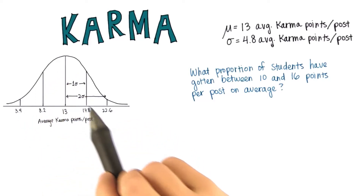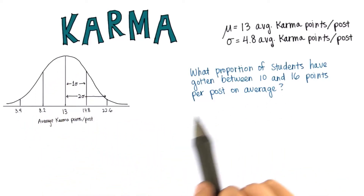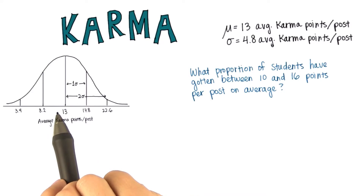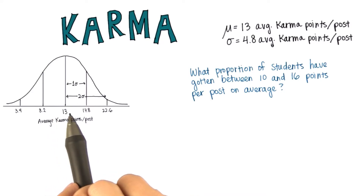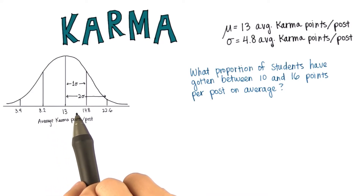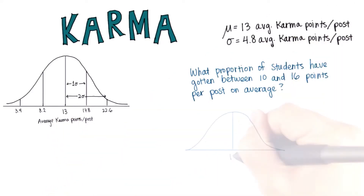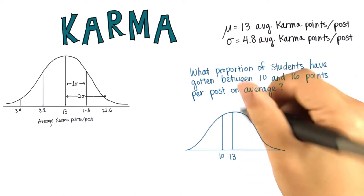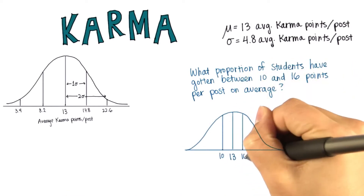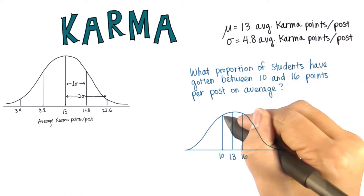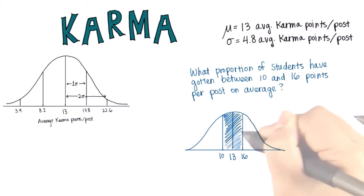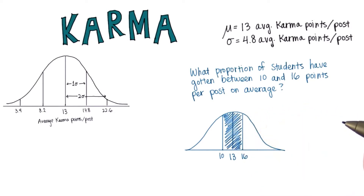Let's start by looking at where 10 and 16 fall in the distribution. 10 is 3 points less than the mean, and 16 is 3 points greater than the mean. So if 13 is the mean, 10 is here and 16 is here, and we're looking for the area in between those two. How might we figure this out?